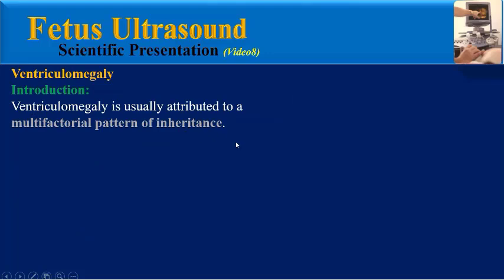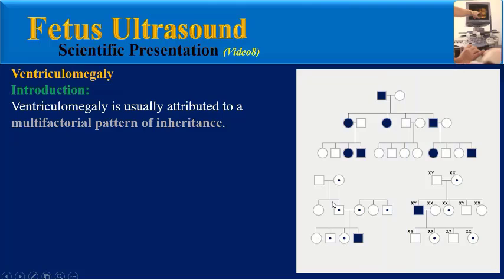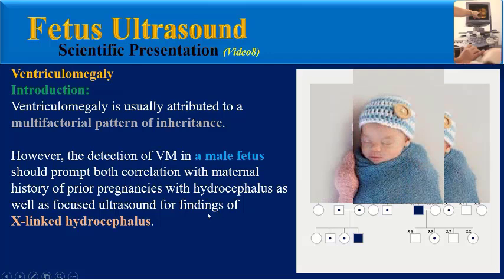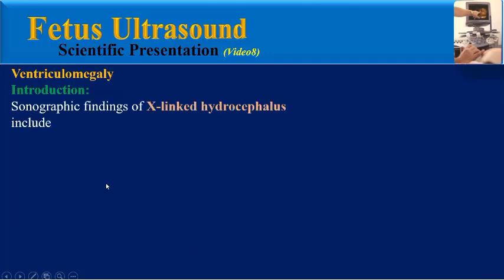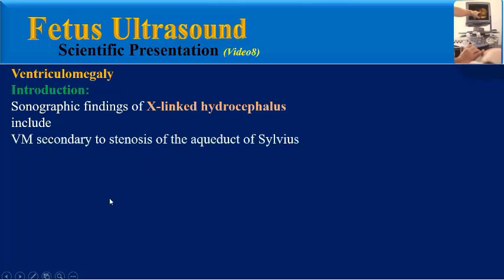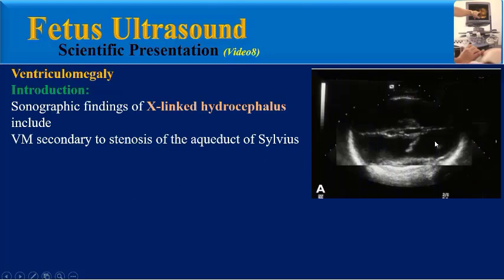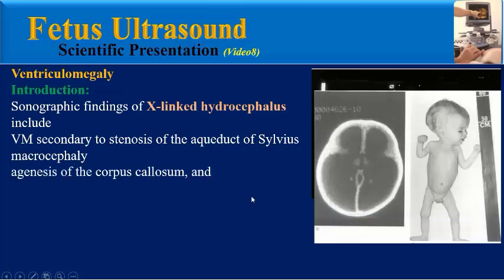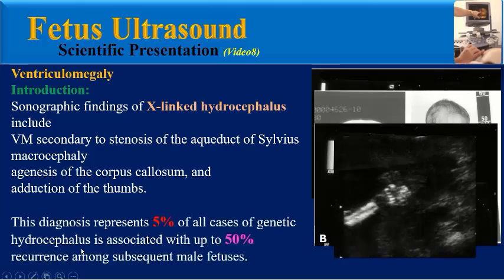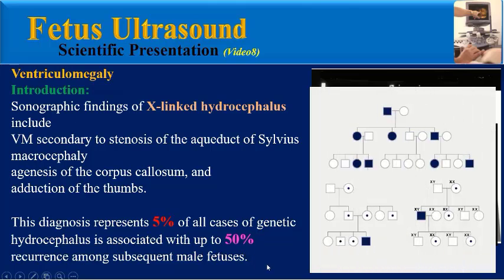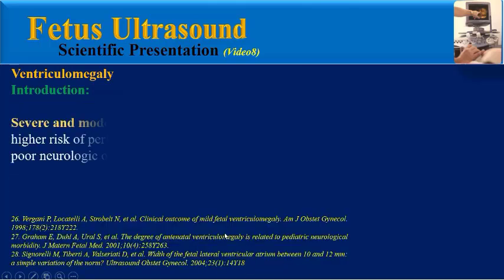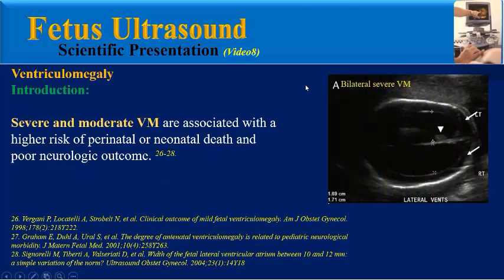Ventriculomegaly is usually attributed to a multifactorial pattern of inheritance. However, detection in a male fetus should prompt correlation with prior pregnancies with hydrocephalus and focused ultrasound for X-linked hydrocephalus. Sonographic findings of X-linked hydrocephalus include ventriculomegaly secondary to stenosis of the aqueduct of Sylvius, macrocephaly, agenesis of corpus callosum, and adduction of the thumb. This represents 5% of genetic hydrocephalus cases, with up to 50% recurrence among subsequent male fetuses.